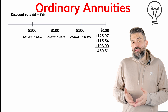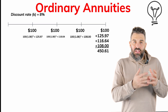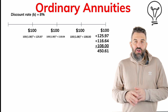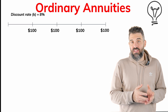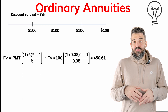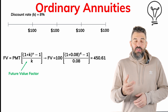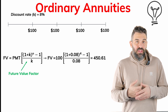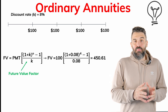To find the future value — the value at the end of the cash flows — you can find the FV of each individual payment and add them up, giving $450.61. Or using the future value formula — payment multiplied by ((1 plus the discount rate) to the power n, minus 1), all divided by the discount rate — you get the same result: $450.61.